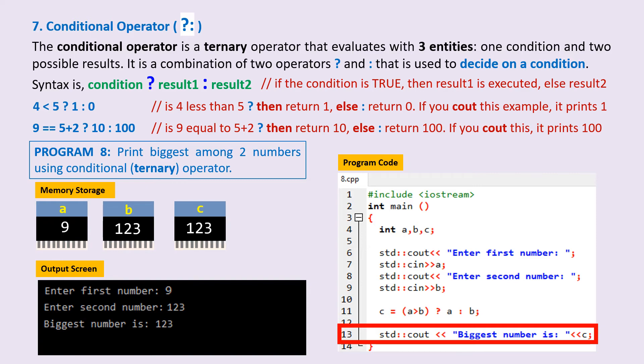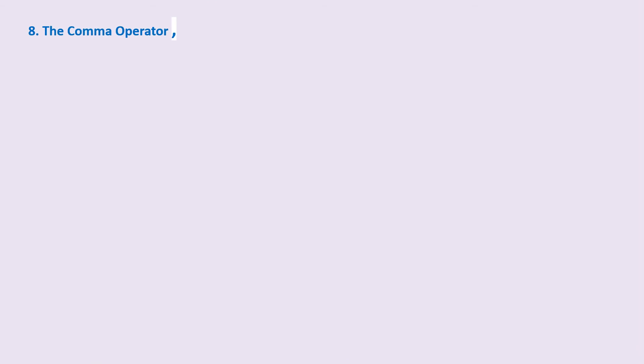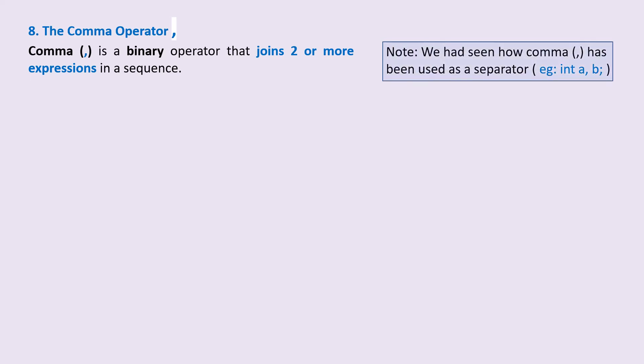The comma operator. Comma is a binary operator that joins two or more expressions in a sequence. Note that we had seen how comma has been used as a separator in the declaration int a, b.